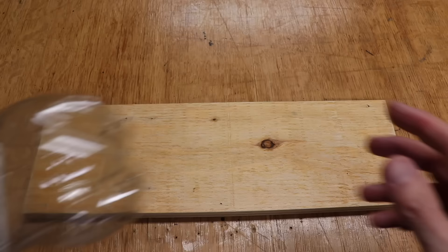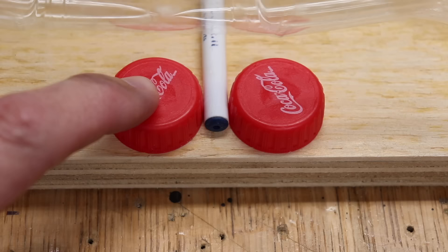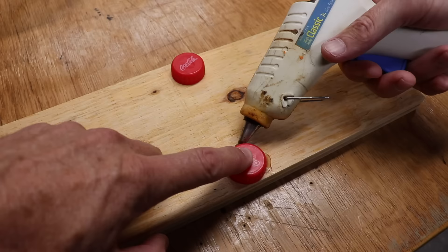Now take the four caps and glue one in front of and one behind the tube on both sides. And make sure to leave a little bit of space between the tube and the cap so it can move freely.